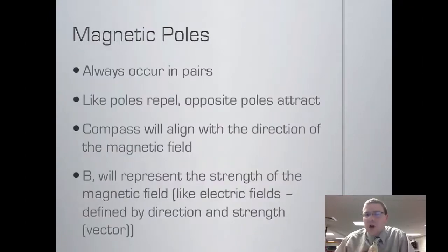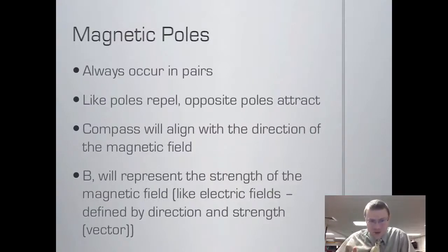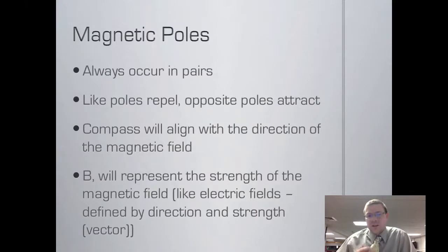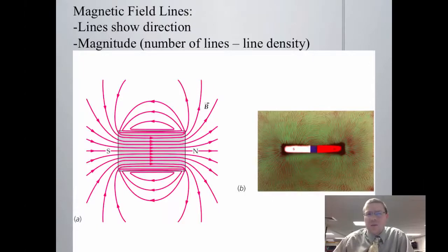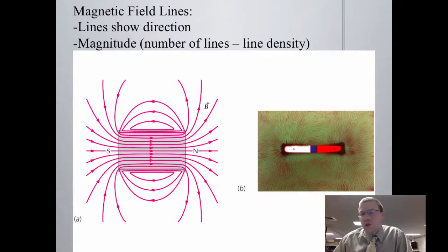Some observations: the magnetic field always occurs in pairs, like poles repel and opposite poles attract — just like charges. The compass will align with the direction of the magnetic field. We have a new vector, B, which represents the strength of the magnetic field. Like electric fields, magnetic fields have a strength and a direction. They're strong when close to the magnet and weaker further away. For a permanent bar magnet, field lines go out of the north pole and come back in at the south pole, creating a closed loop through the middle of the bar magnet.